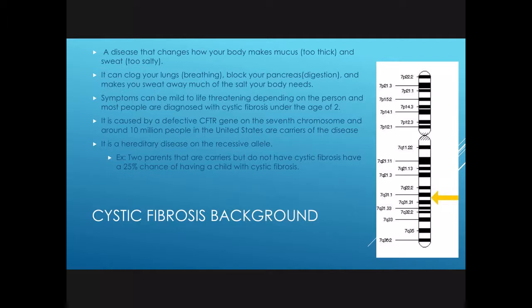It's caused by a defective CFTR gene on the seventh chromosome — that's where this yellow arrow is indicating. Over 10 million people in the United States are carriers of the disease, but being a carrier does not necessarily mean you have the disease. It's a hereditary disease that comes under a recessive allele. An example of this is two parents that are carriers but do not have cystic fibrosis have a 25% chance of having a child with cystic fibrosis.